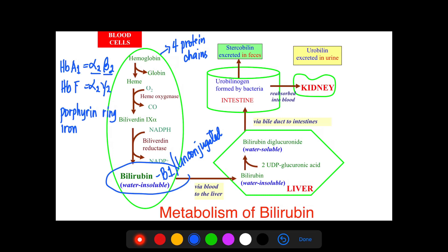When initially formed, bilirubin is insoluble in water and therefore insoluble in blood. It needs to be carried by another protein — albumin — in a non-covalent fashion. There is also delta bilirubin, which is bound to albumin in a covalent fashion, meaning it is tightly bound to albumin.